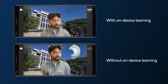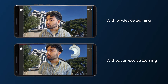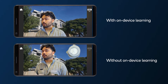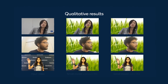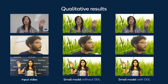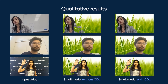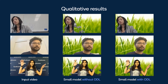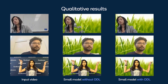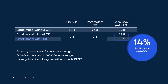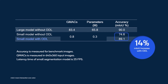For this demo, we show two side-by-side mobile devices, one doing the video segmentation with and without ODL. The ODL model provides improved segmentation with a virtual background, both qualitatively and quantitatively. The mean intersection over union metric, or mIoU, improves significantly for the ODL model versus baseline.